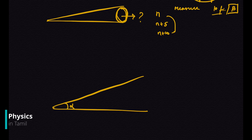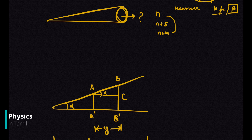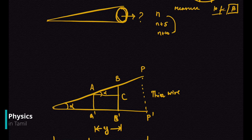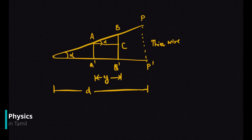Take these two points as B, A prime and B prime. Let me draw and name it as C, which also has angle alpha. Let me take this distance as Y and the total distance. At point P and P prime, I kept my thin wire or sheet. This is the distance D.